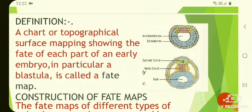Moreover, a correct interpretation of gastrulation is only possible when we have a perfect knowledge of the position of presumptive germinal layers which they occupy in the blastula. A fate map is a chart or topographical surface mapping which shows the fate of each part of an early embryo — in particular, a blastula.